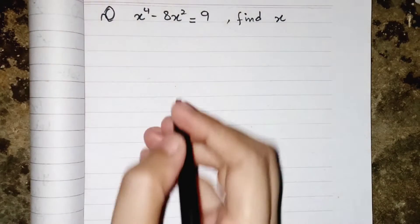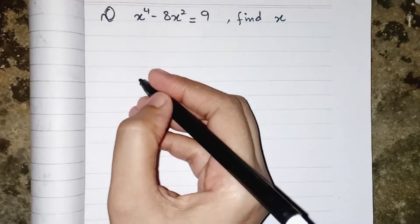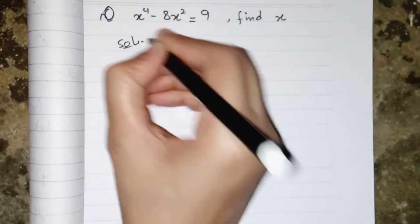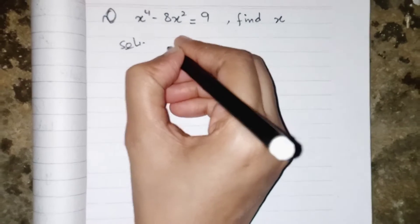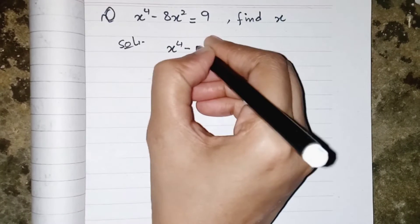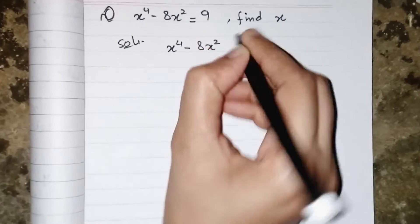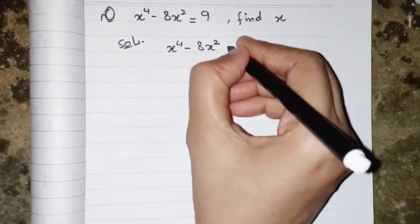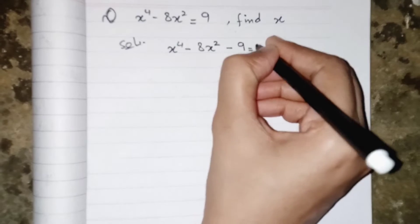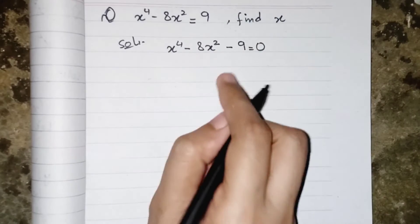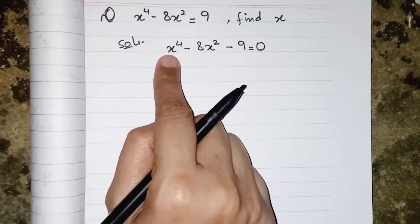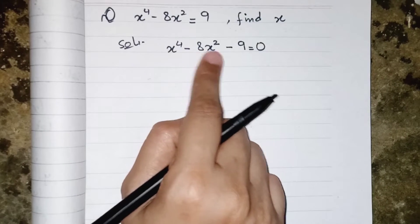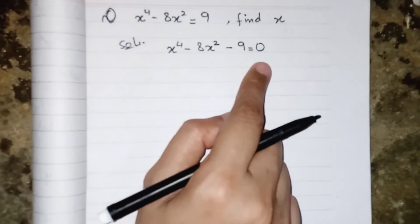Hello everyone, today we are solving this quartic equation to find the value of x. First of all, we have to write the equation in its standard form, so we have to move this 9 to this side, and it will become minus 9. Now my equation will be x⁴ minus 8x² minus 9 equals 0.